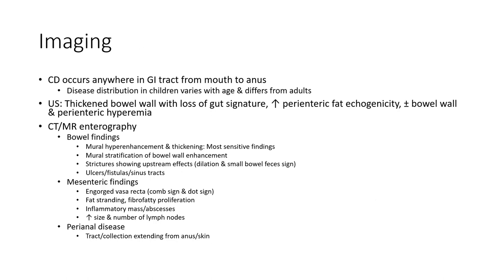Crohn's disease occurs anywhere in the GI tract from mouth to anus. Disease distribution in children varies with age and differs from adults. On ultrasound: thickened bowel with loss of gut signature, increased peri-enteric fat echogenicity, plus or minus bowel and peri-enteric hyperemia.